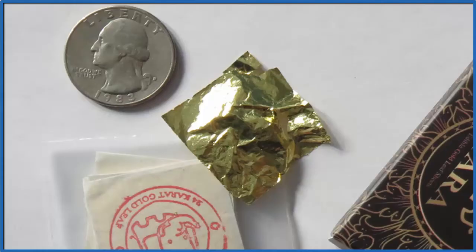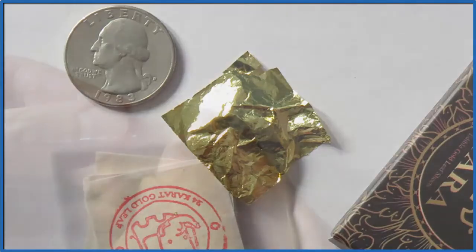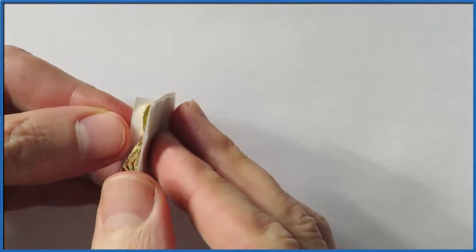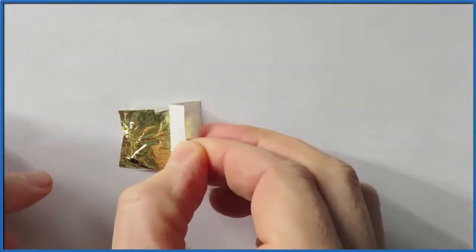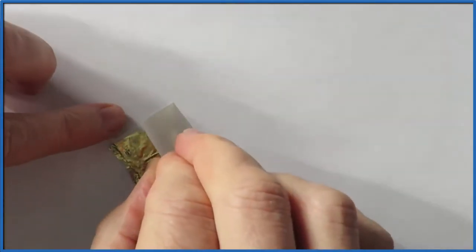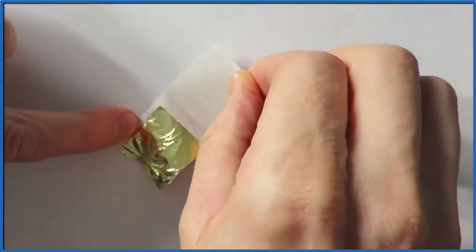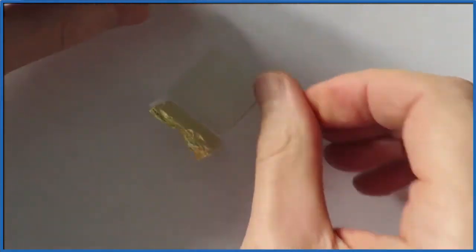It's about as big as a quarter. These are 24 karat gold, supposedly pure gold. Gold is interesting in that it can be flattened into very thin sheets just a few atoms thick. That's why Rutherford used gold foil in his experiments when he was studying the structure of the atom and ended up finding the nucleus.